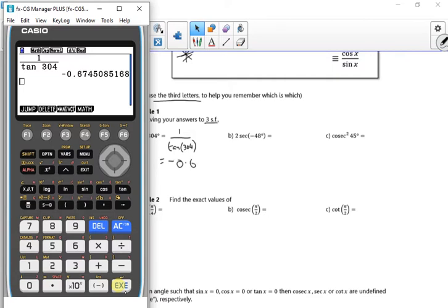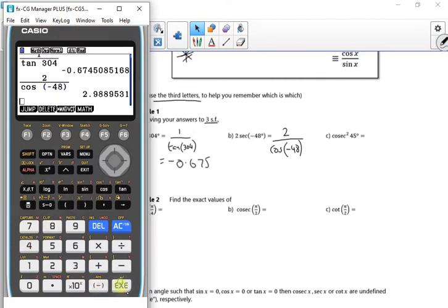So I'm doing 1 over tan of 304. That gives me minus 0.6675. For 2 sec minus 48, that's 2 over cos of minus 48, so I can put that in my calculator: 2 over cos of minus 48 equals 2.99.